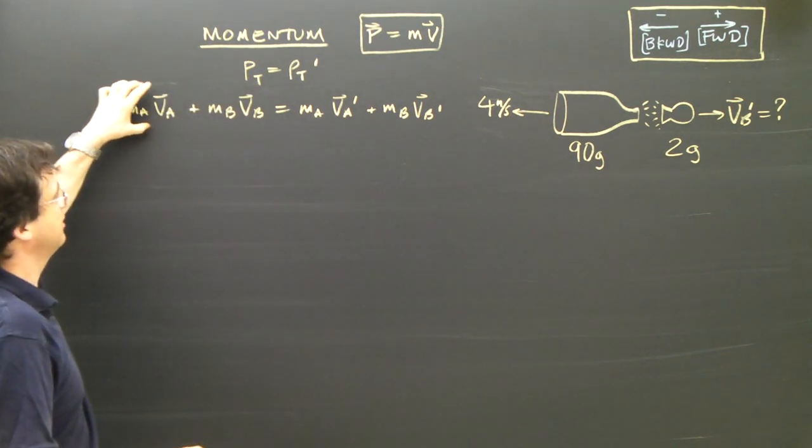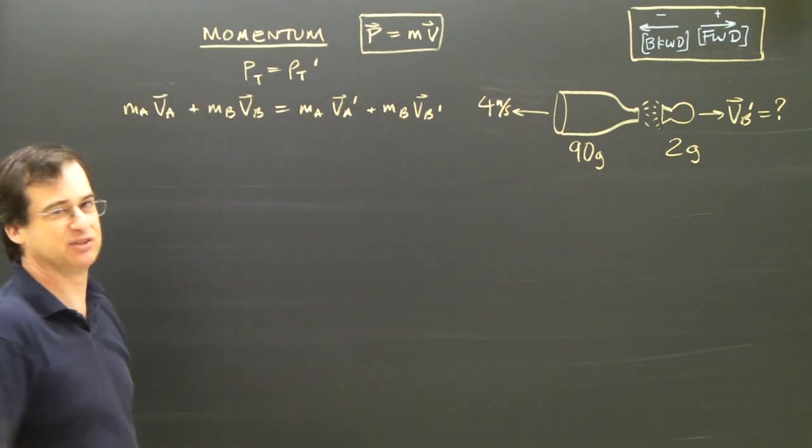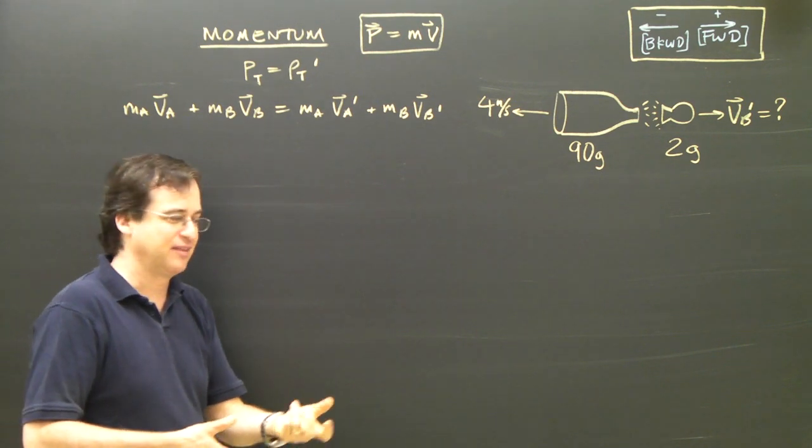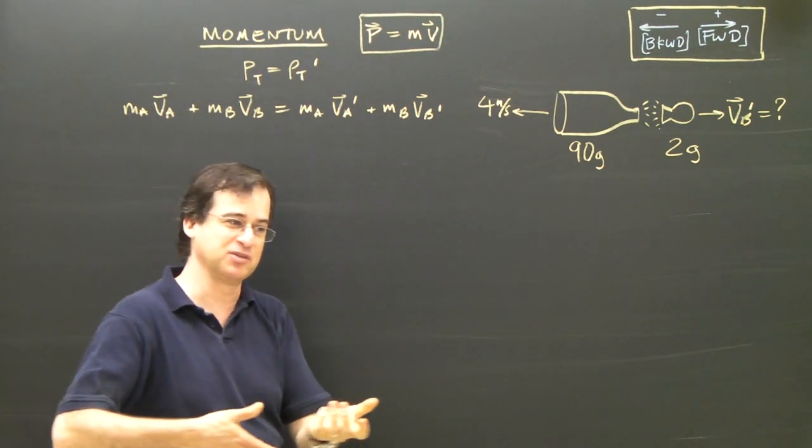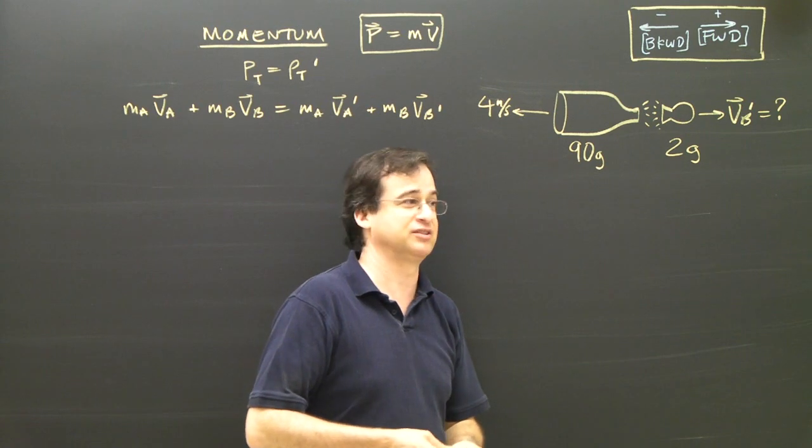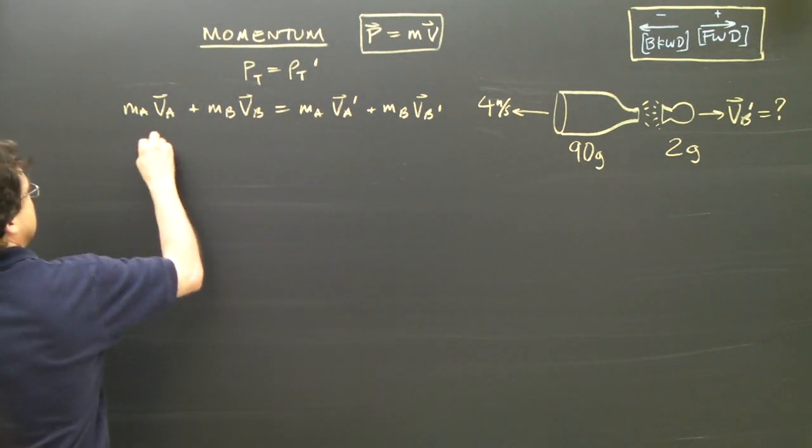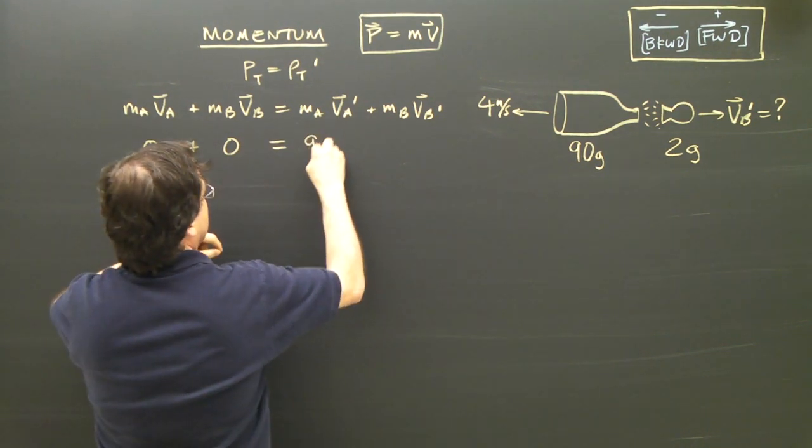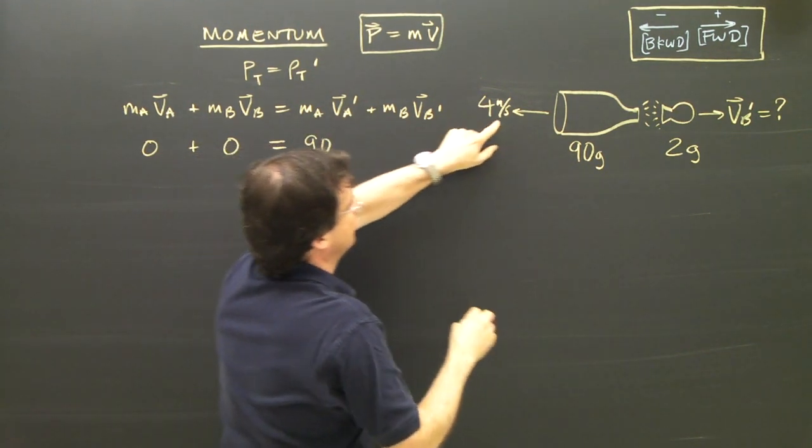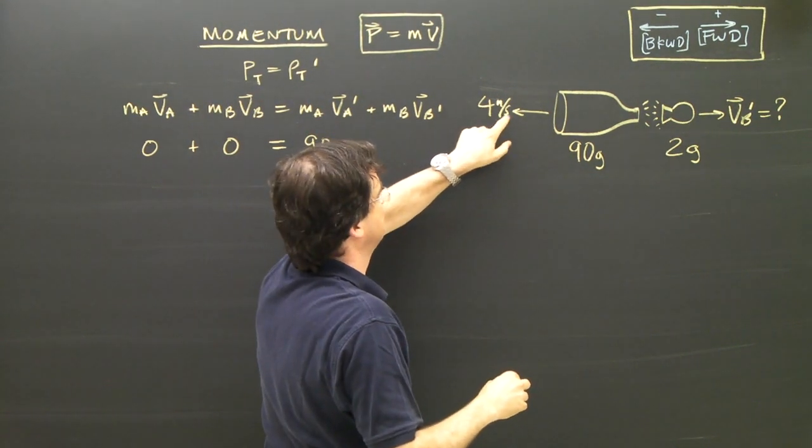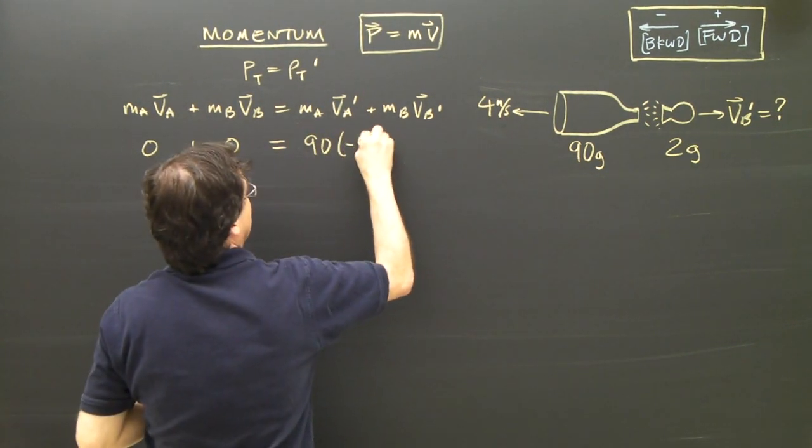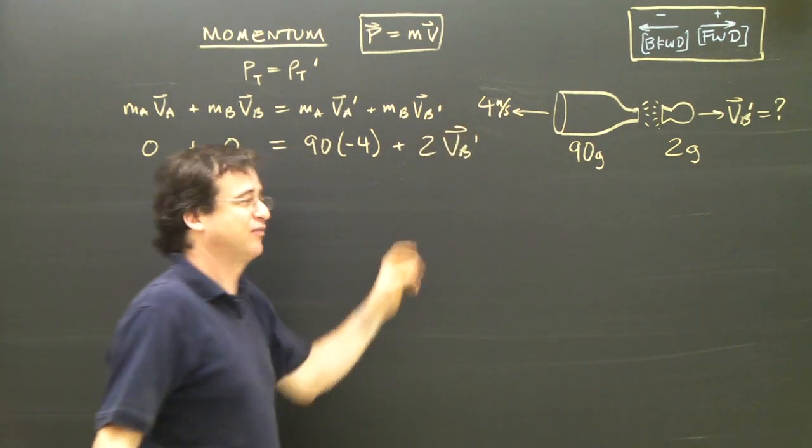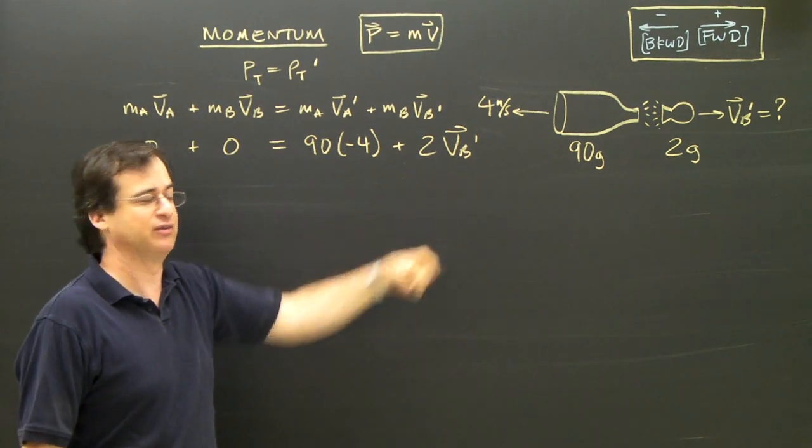The momentum of A is zero because it's not moving. The momentum of B is zero, so this all adds up to zero. If I was walking with the champagne bottle at the time, then I'd have to add the two masses together and say 92 grams moving forward at a certain velocity. Okay, so let me plug in the numbers. This is going to be zero. This is going to be zero, so everything before is zero. I've got 90 times VA afterwards. This is the final velocity after the explosion of four, which is negative four, plus two grams and VB afterwards. I've got one equation and I've got one unknown, so I'm going to be able to solve this.